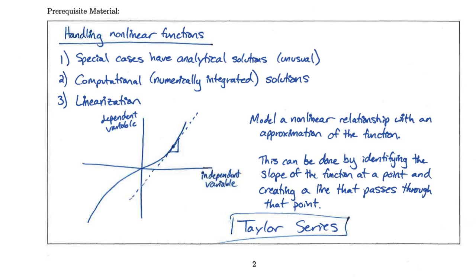We have a mathematical formulation that describes this — the Taylor series. The Taylor series starts with a constant, which is the value of the function at the particular point where we're trying to linearize. The independent variable is set by whatever operating point we want to use. For example, with a spring compressed at some length, that length sets our independent variable. The first term in the Taylor series is obtained by evaluating the function at that point.